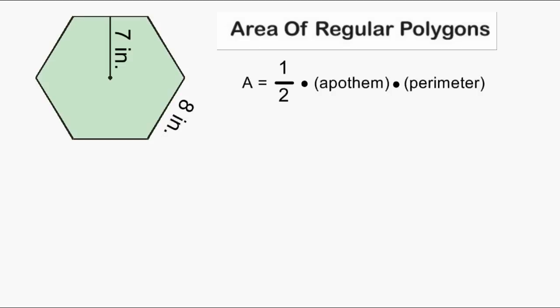We are going to use the example of a regular hexagon to demonstrate how to use this area formula. The first thing we have to do is figure out what the length of the hexagon's apothem is. The apothem in this case is 7 inches. The apothem is the distance from the center of your polygon to the midpoint of any of the polygon sides.